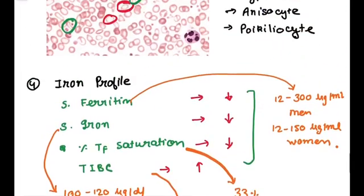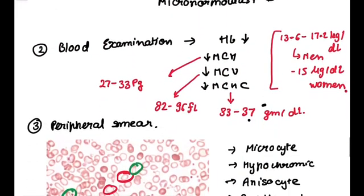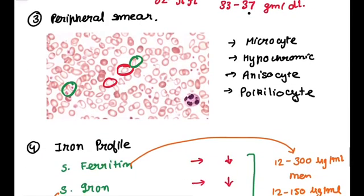So now we covered four diagnostic methods. First is bone marrow examination. Second is blood examination. Third is peripheral smear. And fourth is iron profile.